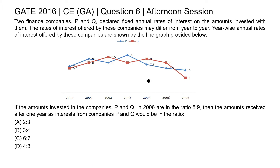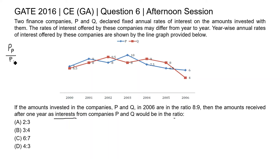In this question, a line graph of rates of interest offered by two companies P and Q is given for several years. The ratio of amount invested in company P and Q in 2006 is given as 8 to 9. We need to find the ratio of amount received after one year as interest from company P and Q. So the principal amount of P to principal amount of Q in year 2006 is 8 to 9.